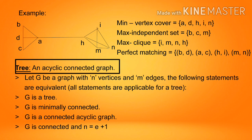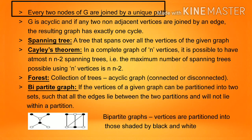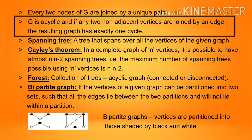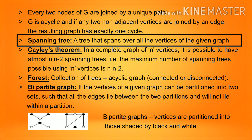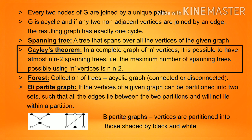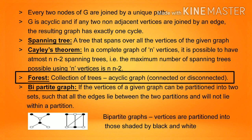Tree: an acyclic connected graph is a tree. Let G be a graph with N vertices and M edges. The following equivalent statements apply for a tree: G is a tree; G is minimally connected; G is a connected acyclic graph; G is connected and N = E + 1; every two nodes are joined by a unique path; G is acyclic and adding any edge creates exactly one cycle. Spanning tree: a tree that spans over all vertices of the given graph. Cayley's theorem: in a complete graph of N vertices, the maximum number of spanning trees is N^(N−2). A forest is a collection of trees — an acyclic graph, connected or disconnected.